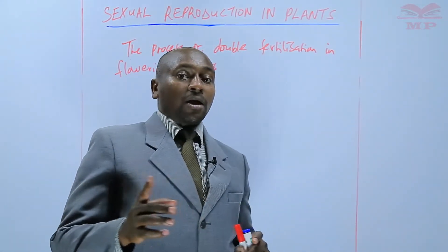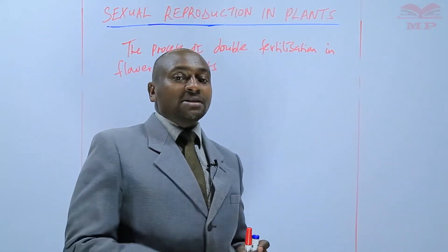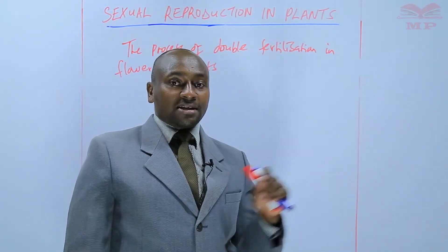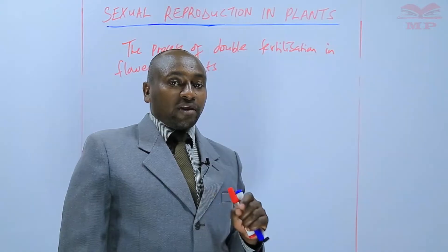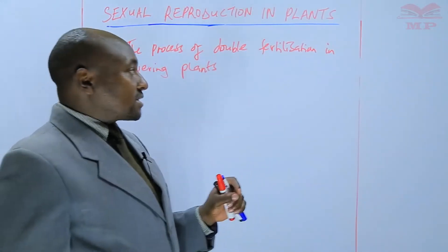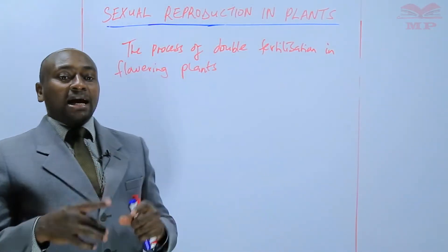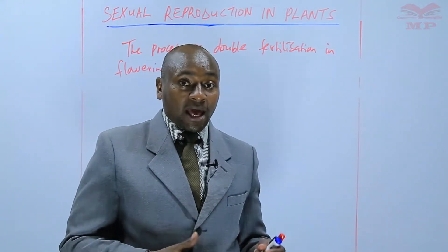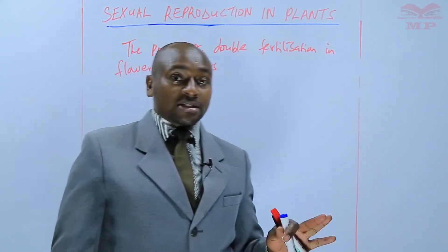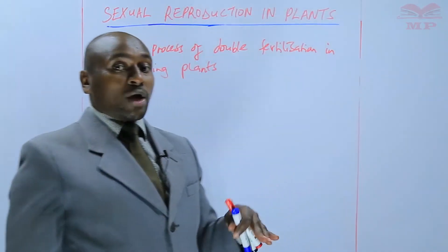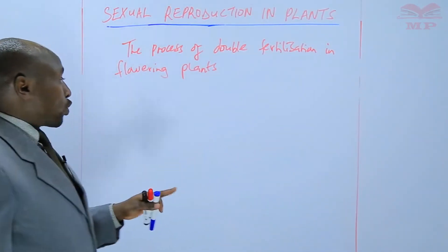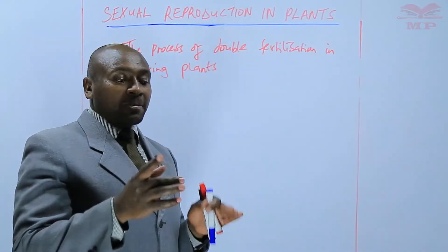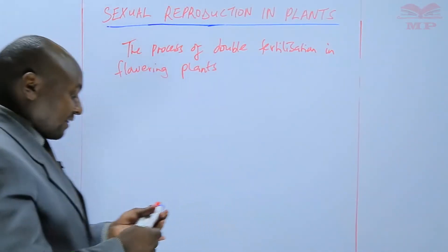So now, what happens when the pollen grain lands on the stigma? When the pollen grain lands on the stigma, there are a number of processes that occur. Before we discuss those processes, we are going to have a diagram showing a pollen grain having landed on the stigma, and then we see what follows after that.